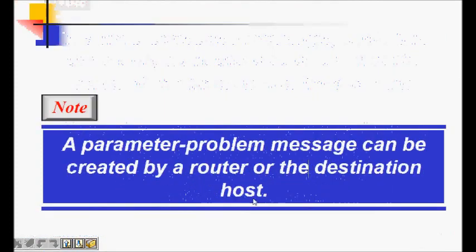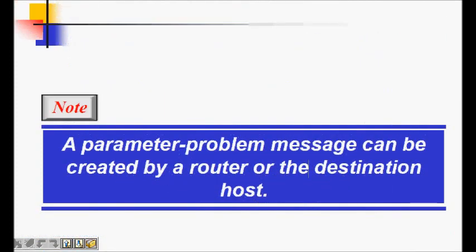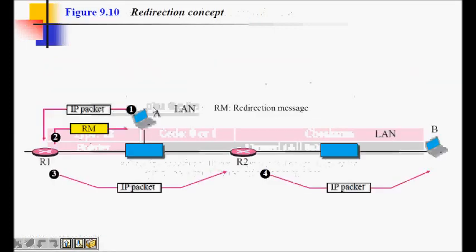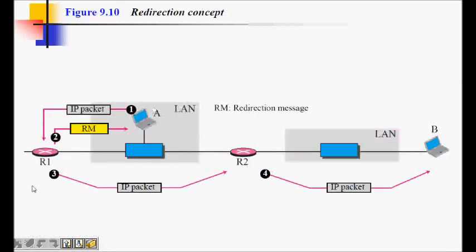Then we have redirection concept. So what is redirection? I'm on LAN, A is the machine. It sends one IP packet to B but it sends it to router R1. There are two gateway routers, it sends it to R1. R1 now says that it knows that B is on this side.